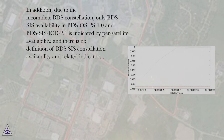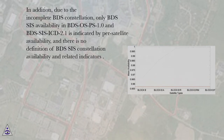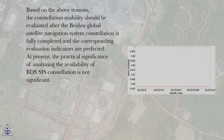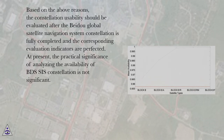In addition, due to the incomplete BDS constellation, only BDS CIS availability in BDS OSPS 1.0 and BDS CIS ICD 2.1 is indicated by per-satellite availability, and there is no definition of BDS CIS constellation availability and related indicators. Based on the above reasons, the constellation usability should be evaluated after the BDS Global Satellite Navigation System constellation is fully completed and corresponding evaluation indicators are perfected. At present, the practical significance of analyzing the availability of BDS CIS constellation is not significant.